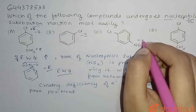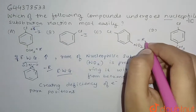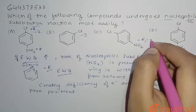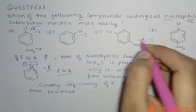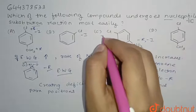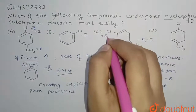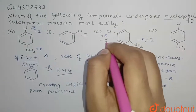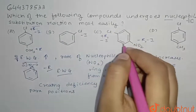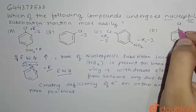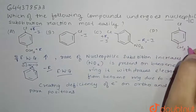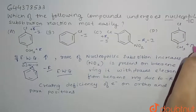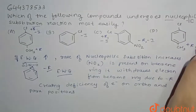In option C, we have NO2 which shows minus-R and minus-I effect, and Cl which shows plus-R and minus-I effect. In option D, CH3 is present, which shows plus-R effect.